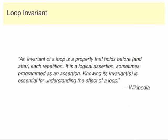A loop invariant — there are many different ways of looking at it, but Wikipedia puts it well: an invariant of a loop is a property that holds before and after each repetition. It is a logical assertion, sometimes programmed as an assertion. Knowing it's invariant is essential for understanding the effect of a loop. It's something which is true throughout the execution of the loop.